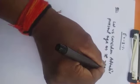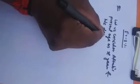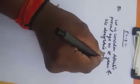Let us read Question number 1. Aftab tells his daughter: '7 years ago, I was 7 times as old as you were then. Also, 3 years from now, I shall be 3 times as old as you will be.' We have been given two situations in this question. Represent this situation algebraically and graphically. So, let us consider Aftab's present age as X years and his daughter's present age as Y years.